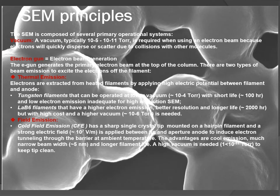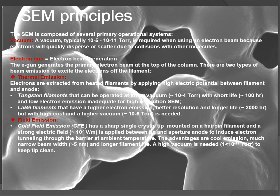The SEM is composed of several primary operational systems. First, the vacuum system: a vacuum, typically 10⁻⁵ to 10⁻¹¹ torr, is required when using an EM because electrons will quickly disperse or scatter due to collisions with other molecules.